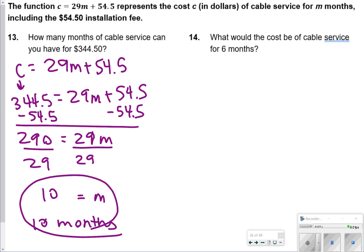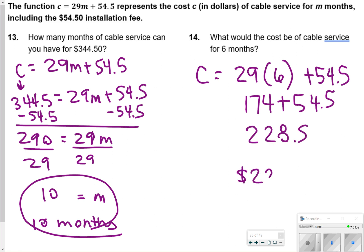For number 14, you're kind of doing the switch of that. What would be the cost of cable service for 6 months? So now you're finding the cost and just plugging in 29 times 6, or 29m, plus the 54.50. That's going to give you 174, or 29 times 6, plus 54.5, which is equal to 228.5. So we would say $228.50.